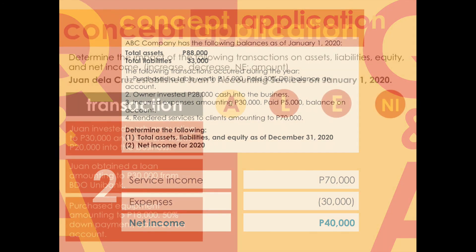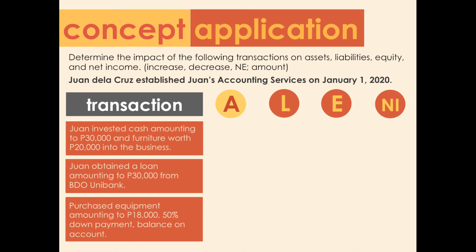Now let's assess the impact of transactions on assets, liabilities, equity, and net income. Transaction one: Juan invested cash of 30,000 pesos and furniture worth 20,000 pesos into the business. This results in an increase in assets of 50,000 and an increase in equity of 50,000.